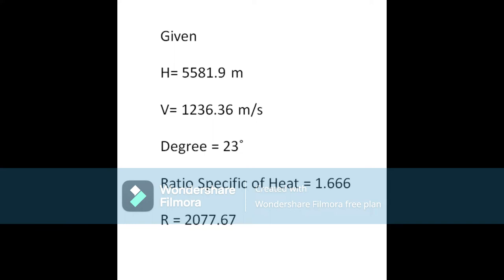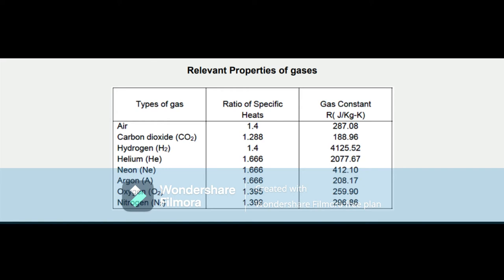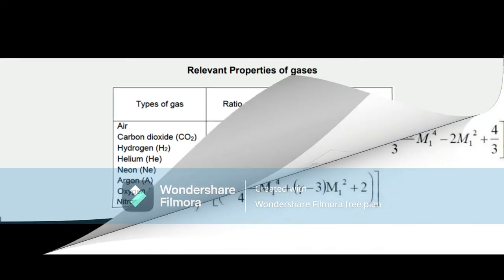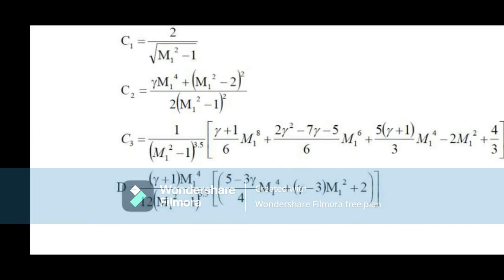Our given values are: height of 5,881.9 meters, velocity of 1,236.36 meters per second, angle of 23 degrees, ratio of specific heats γ = 1.66, and gas constant R = 2,077.67. The values for γ and R are taken from the relevant properties of gases table. These are the formulas we will be using — we will compute for C1, C2, and C3.